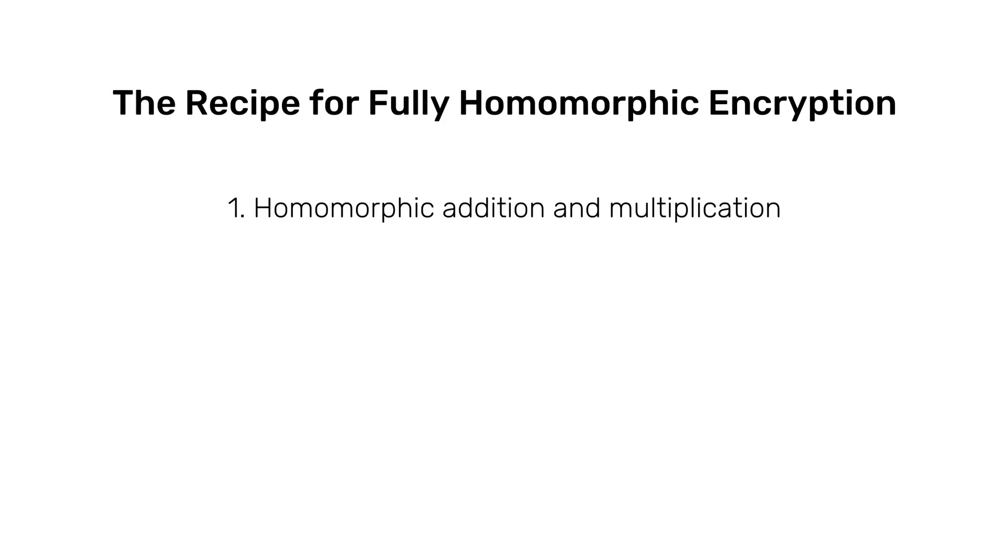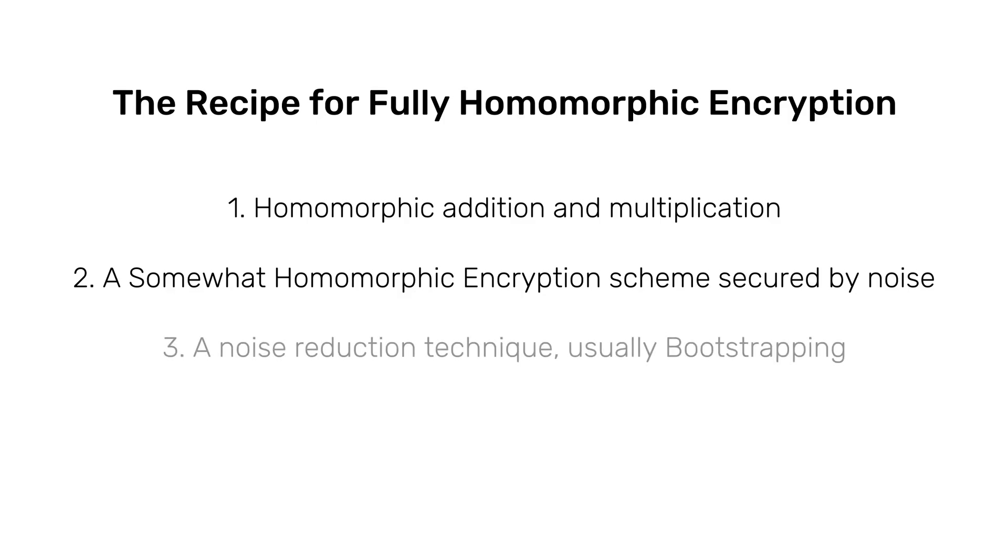And so this is the recipe for most proposed FHE schemes, an underlying somewhat homomorphic encryption scheme that supports addition and multiplication, usually secured by adding noise, and a way to reduce the noise when it grows too large, usually bootstrapping.